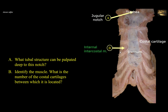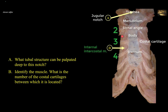Regarding the number of the costal cartilages: to count the ribs and costal cartilages, refer to the sternal angle at the manubriosternal joint. The costal cartilage lateral to that is the second, so the next is the third and then the fourth costal cartilage. The space in which these muscle fibers are located is the third intercostal space. Note that intercostal spaces are counted below the ribs, so the second intercostal space is below the second rib, the third below the third rib, the fourth below the fourth rib, and so on.